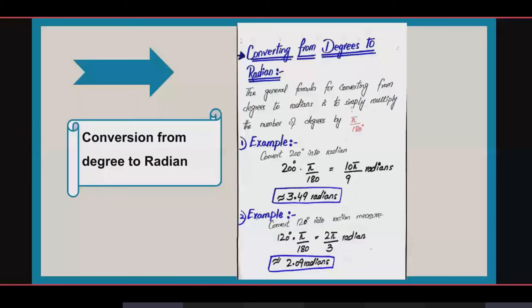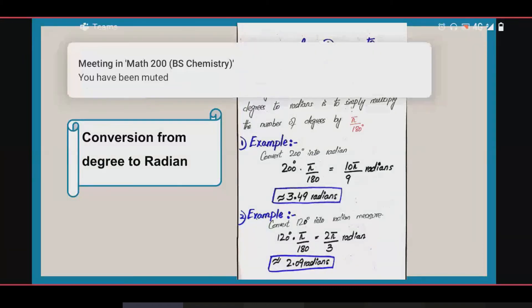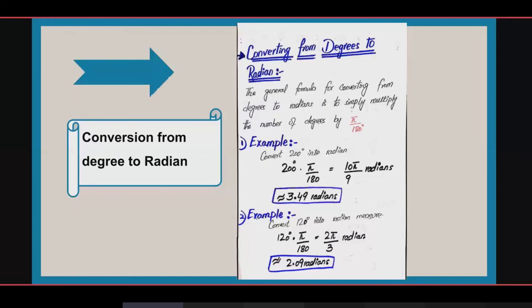Now we will discuss conversion from degree to radian. In order to convert degrees into radians, we multiply by π divided by 180 degrees. When converting radian to degree we multiplied by 180/π, but when converting degree to radian we multiply by π/180. Let us take an example: convert 200 degrees into radians. We multiply 200 by π/180 and we get 10π/9 radians.